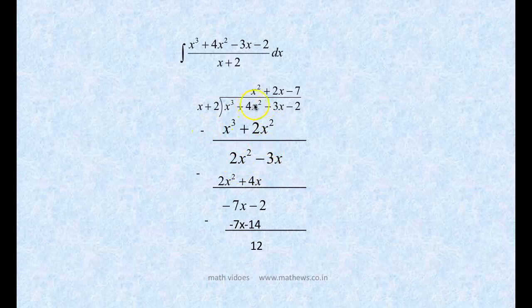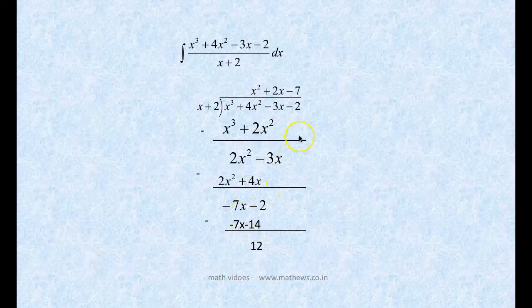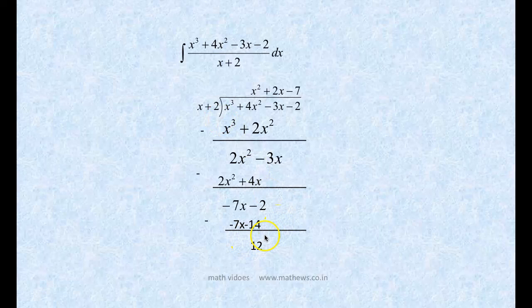2x² divided by x is 2x. Multiply 2x with (x + 2) to get 2x² + 4x. Subtract: -3x - 4x = -7x. Bring down the -2. -7x divided by x is -7. Multiply -7 with (x + 2) to get -7x - 14. Subtract: 7x cancels and we get -2 + 14 = 12.